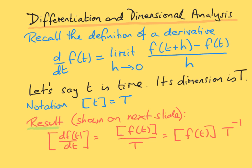The result we're going to show is that the dimension of the derivative of f of t with respect to t is going to be the dimension of the function we are differentiating divided by the dimension of time — in other words, it is the dimension of the function multiplied by an inverse power of the time dimension, capital T.